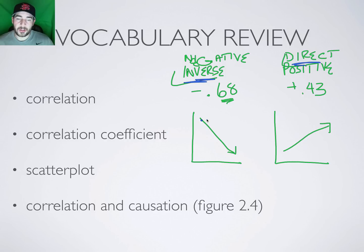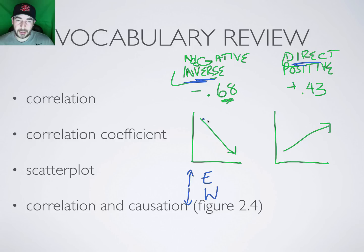An inverse correlation would be something like exercise and weight: as the amount of exercise goes up, your weight goes down. Exercise is on one axis, weight is on the other. Exercise goes up, weight goes down — so the arrow points downward, indicating an inverse relationship.